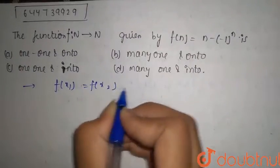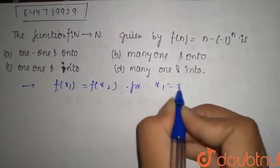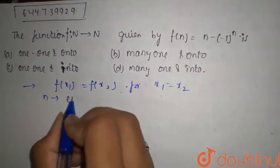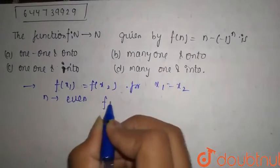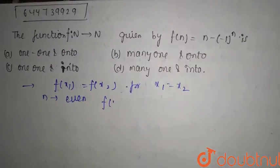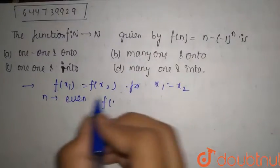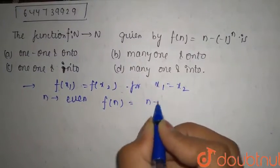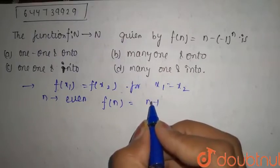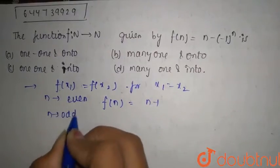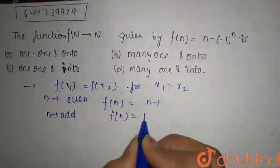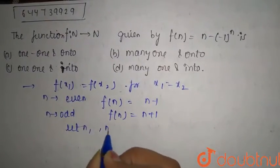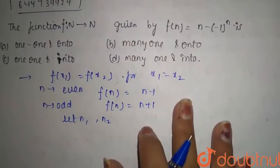Let's take n in the first case as even. We can say that f(n) for even can be written as n minus 1. And if n is odd, then f(n) equals n plus 1. Let n1 and n2 be two numbers.